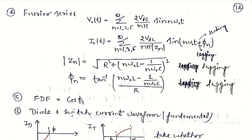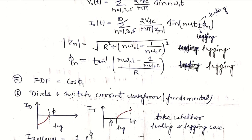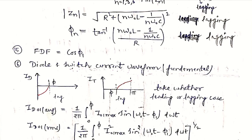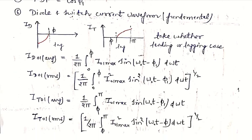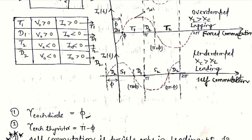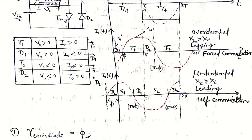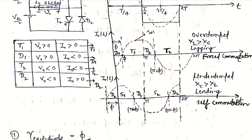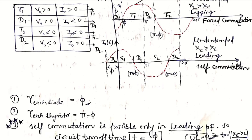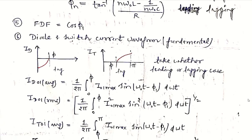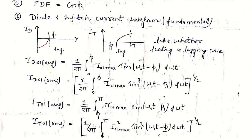The fundamental displacement factor (FDF) is the angle between the fundamental voltage and fundamental current, given by cos(φ₁), where φ₁ is obtained by putting n = 1 in the expression. For diode and switch current waveforms at fundamental frequency: the diode waveform is sinusoidal from 0 to phi, and the thyristor waveform covers phi to 2π. We calculate these for either lagging or leading load cases — the waveforms are sinusoidal in both cases. To find the RMS value of the fundamental components, we consider either the lagging or leading load case; conduction intervals are the same for thyristors and diodes.